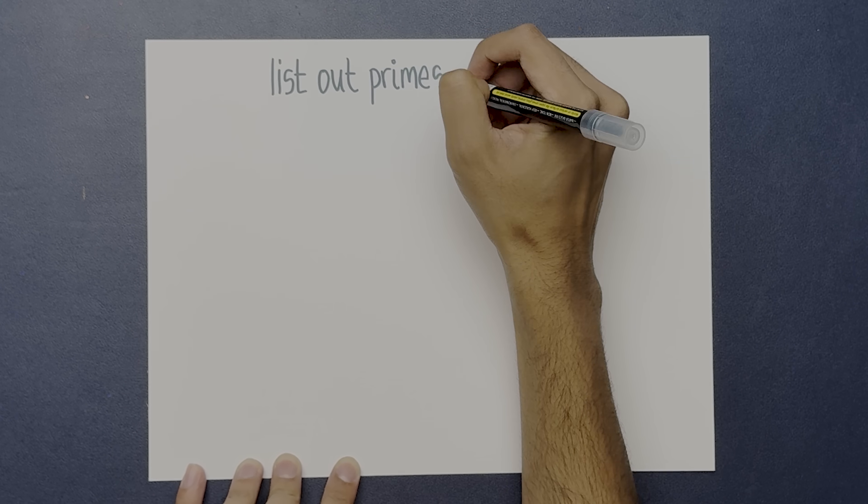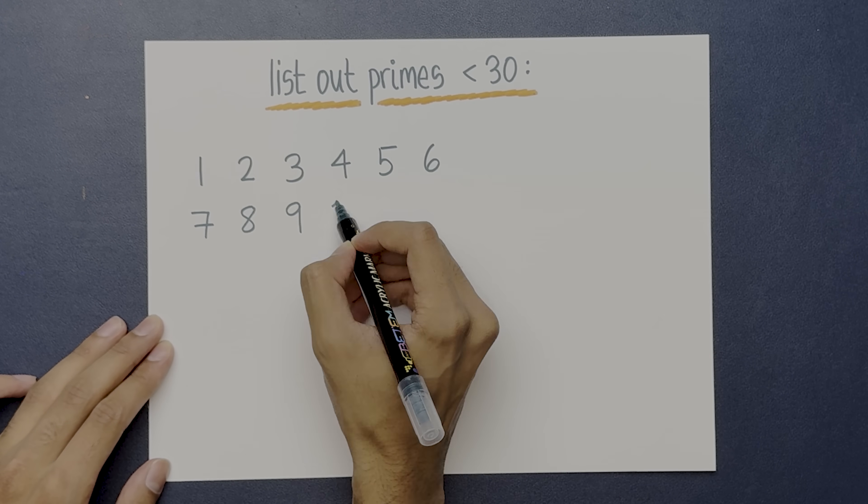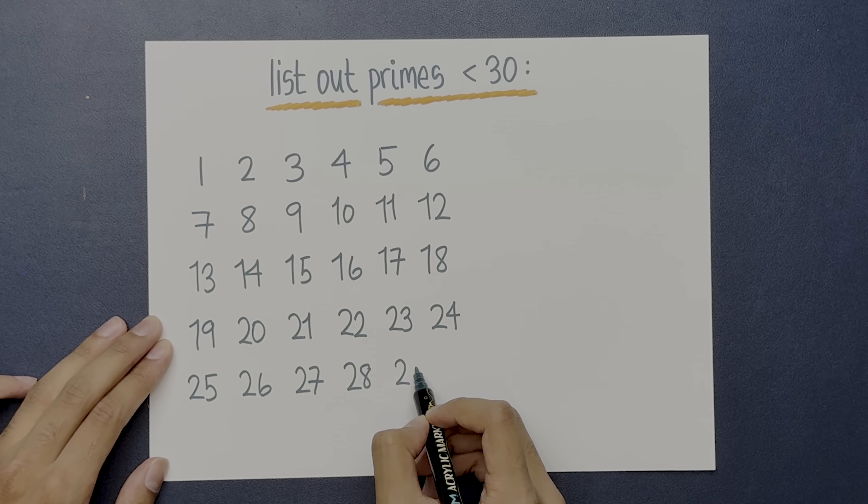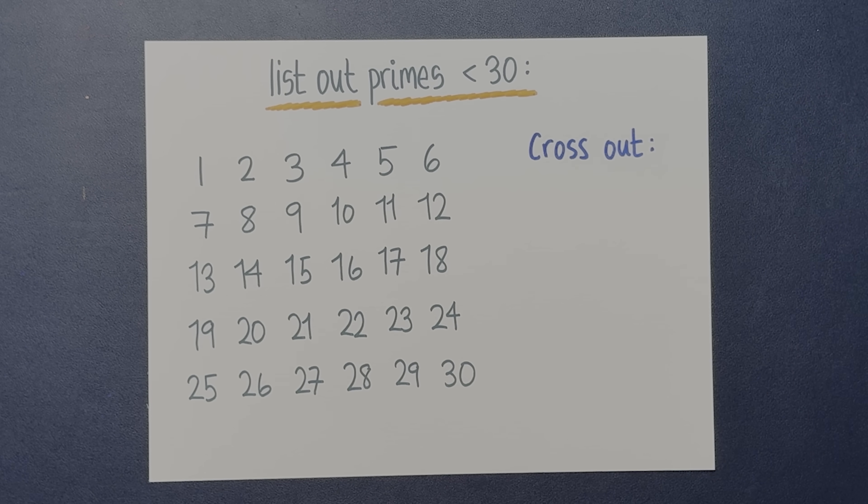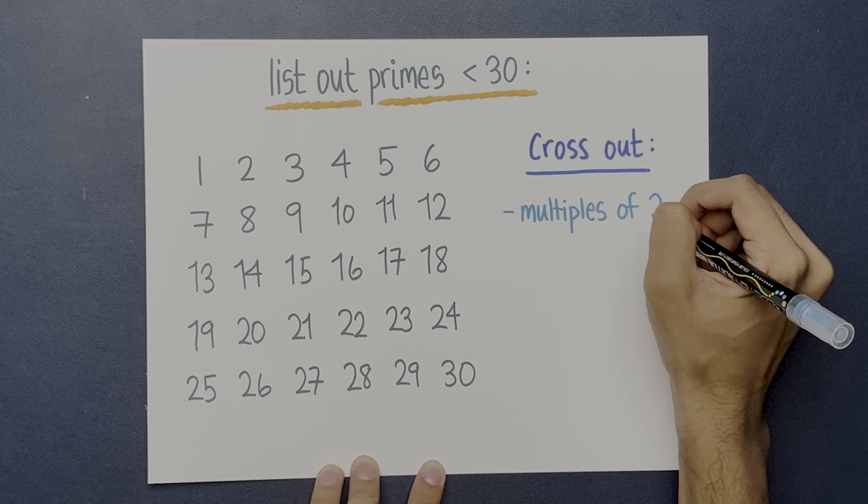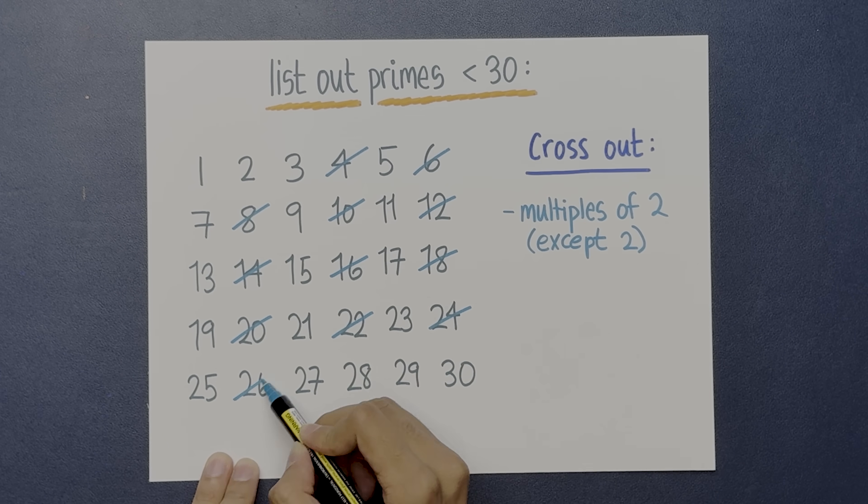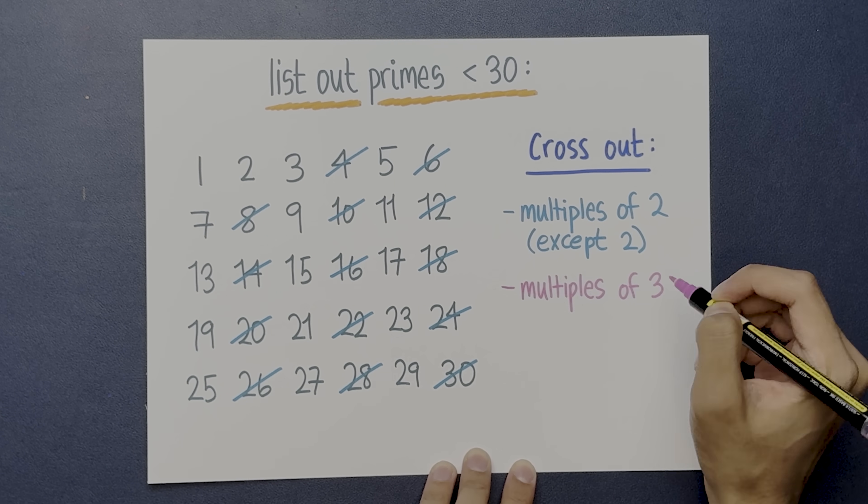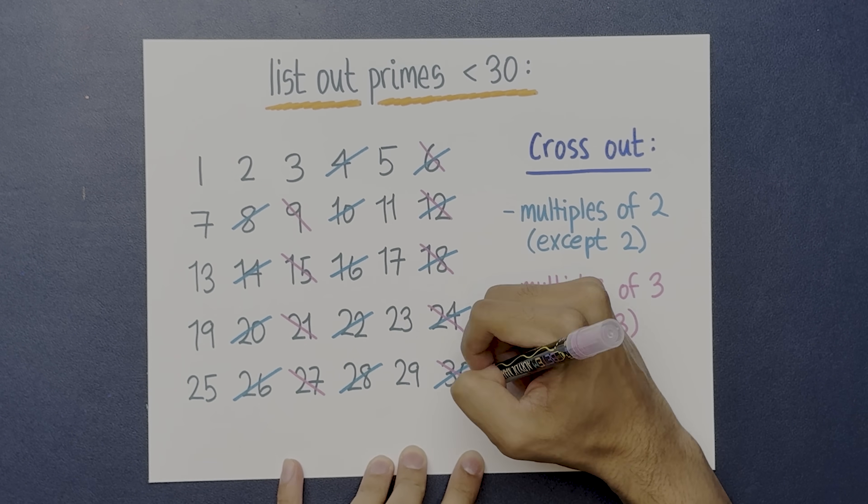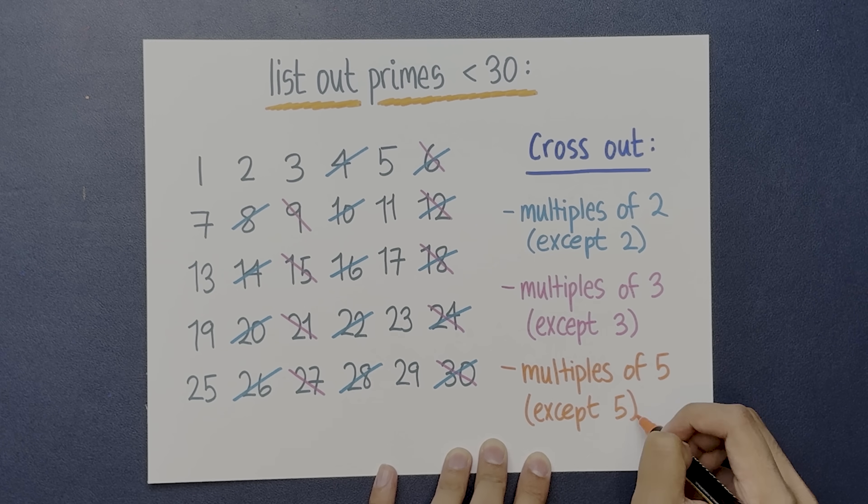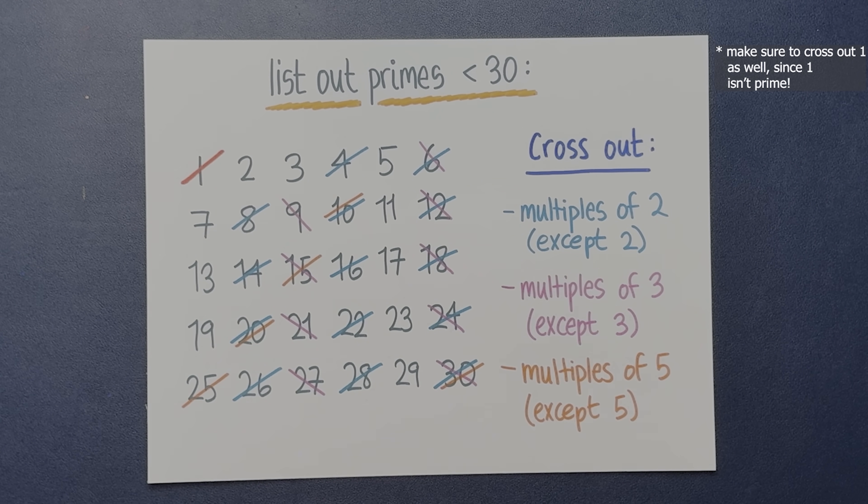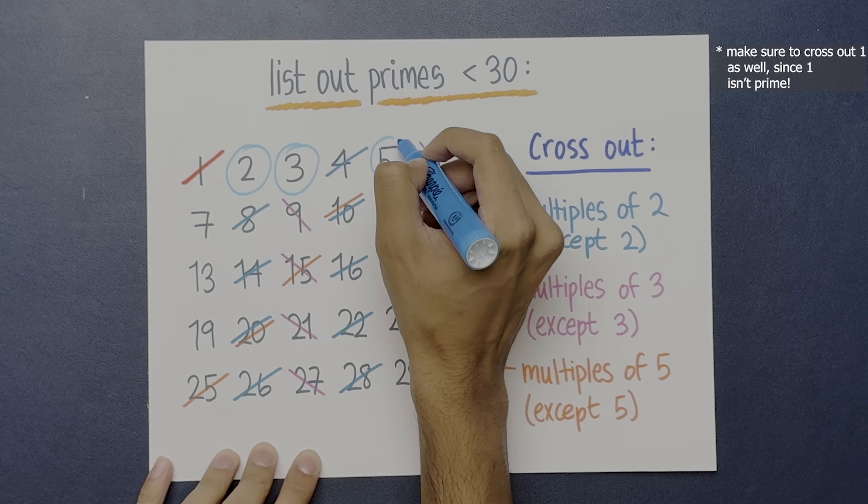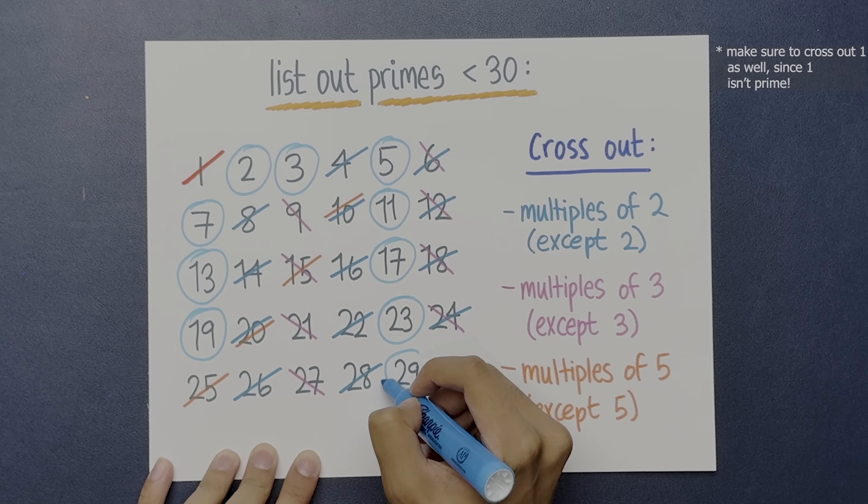Say you want to list all the primes less than, say, 30. Here's how to do that. First, cross out all the multiples of 2, except for 2 itself, because 2 is a prime. Then do the same thing for the next prime, 3. Cross out all the multiples of 3, except for 3 itself. Do the same thing for 5. If you do this for enough primes, you will eventually get a list of all the prime numbers less than 30.